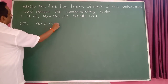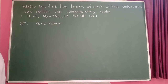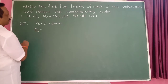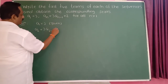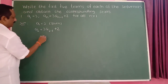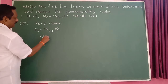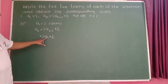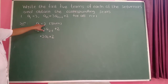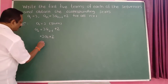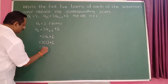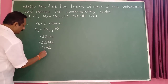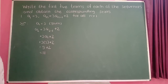The first term is 3. Put n equal to 2. So a_2 is equal to 3 into a_(2-1) plus 2, which is 3 into a_1 plus 2. But a_1 is equal to 3. So this is equal to 3 into 3 plus 2. 3 into 3 becomes 9, plus 2 is 11. So a_2 is equal to 11.